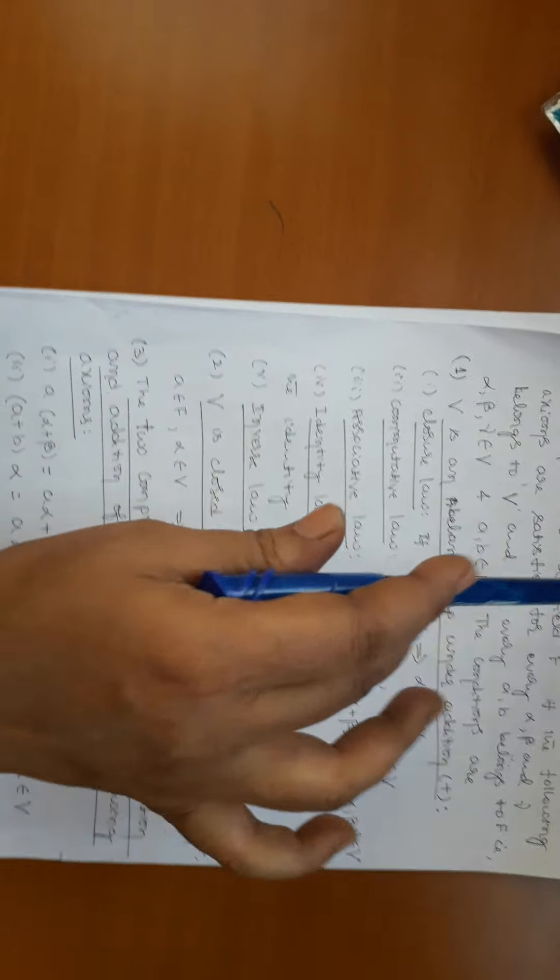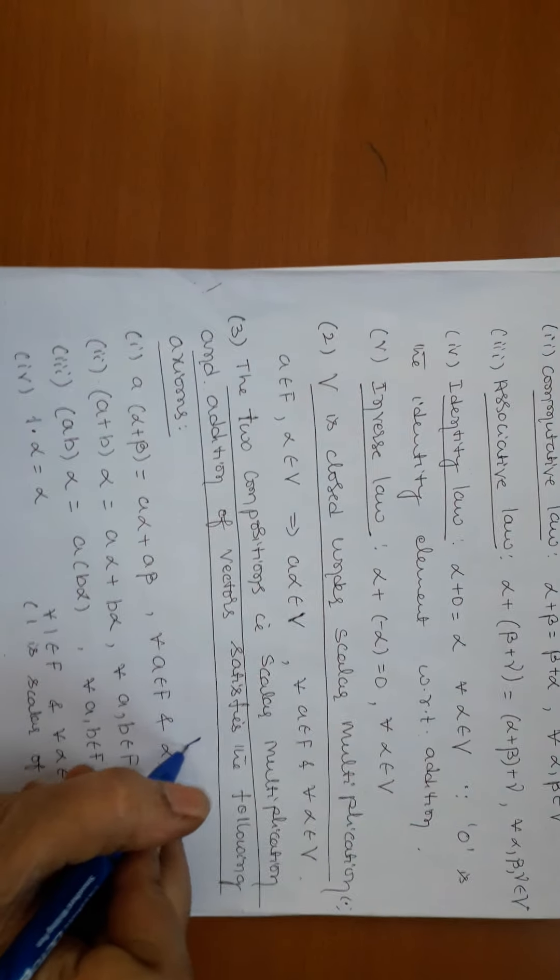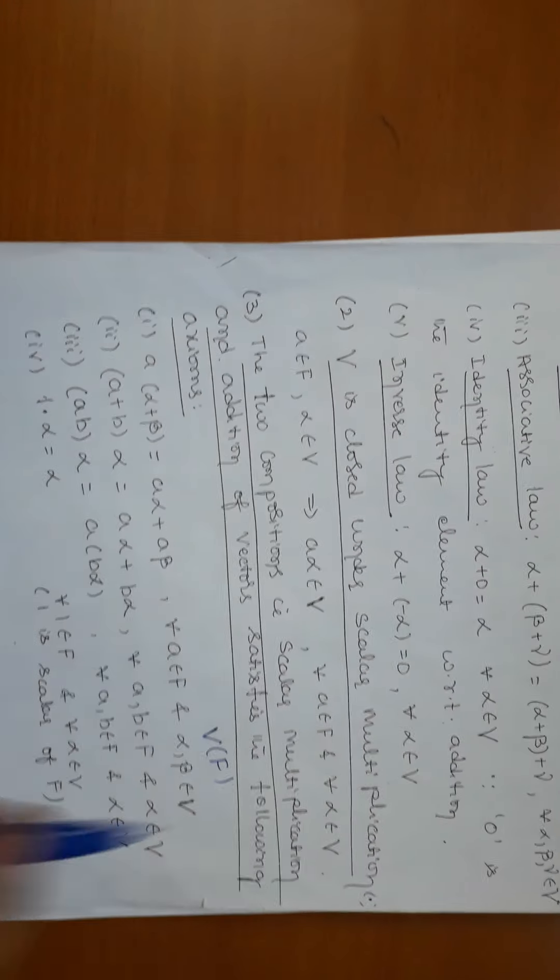To summarize, V is called a vector space over a field F — denoted V(F) — if: V is a non-empty set, V is an abelian group under addition, V is closed under scalar multiplication, and the four additional distributive and associative axioms are satisfied. That is the complete definition of a vector space.